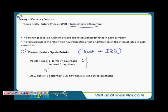How do you calculate the interest rate differential? You have this formula: Points = Spot × [(1 + term_i × days/basis) / (1 + base_i × days/basis) - 1]. Here term_i means the rate of interest in the term currency and base_i is the rate of interest in the base currency. For day basis we generally use a 360-day basis convention.